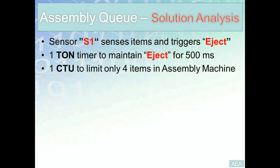We also need a counter counting in the up direction to limit only four items in any side assembly machine. Those are the three simple requirements. We have decided to use a timer on-delay and a counter-up instruction.